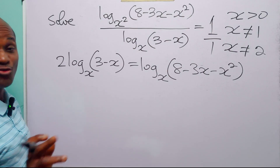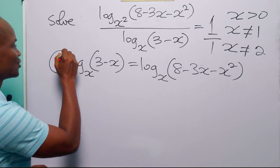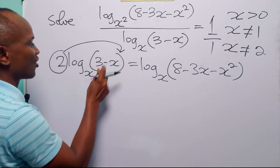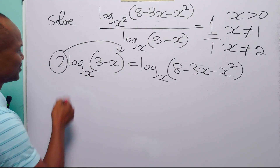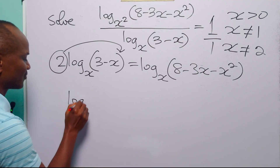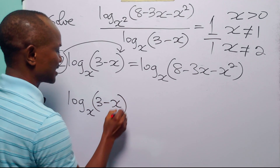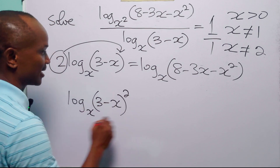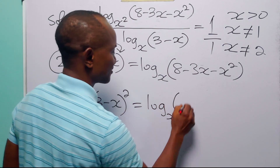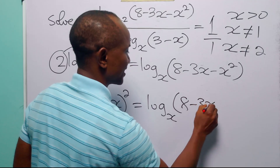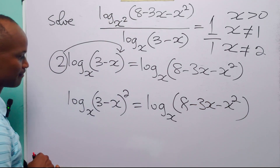Now let us apply the power rule of logarithms to the left-hand side — the rule that says we can take the multiplier 2 up to become the exponent of (3 minus x). When we do this, the left-hand side becomes log base x of (3 minus x)², which is equal to log base x of (8 minus 3x minus x²).